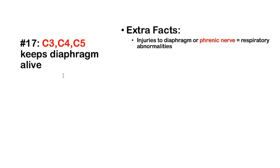Number 17: C3, C4, C5 keep the diaphragm alive. These are the spinal origins of the phrenic nerve. Injuries to the diaphragm or phrenic nerve can result in respiratory abnormalities.